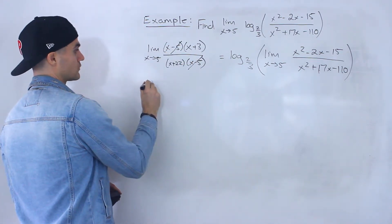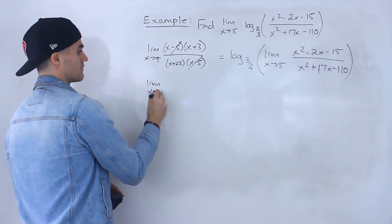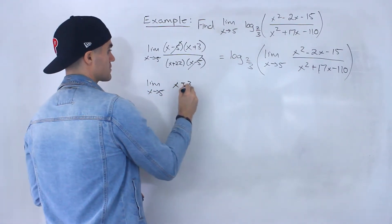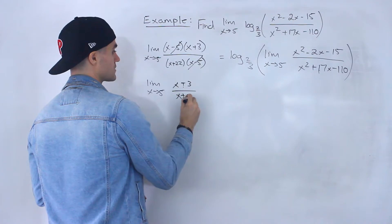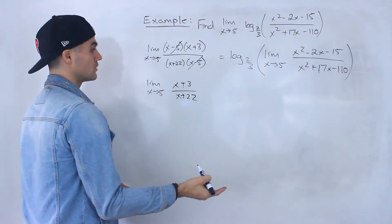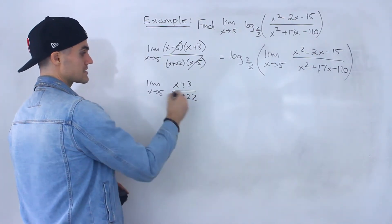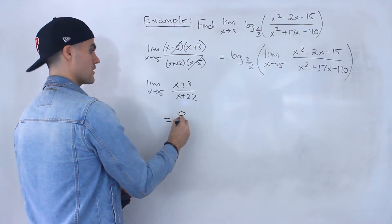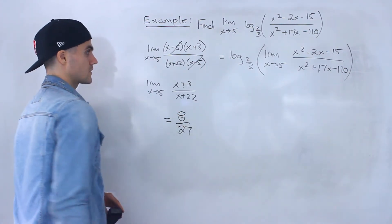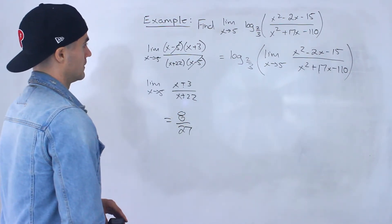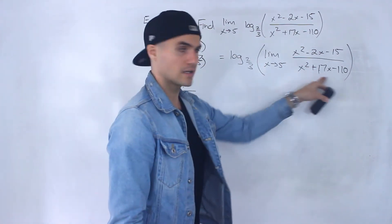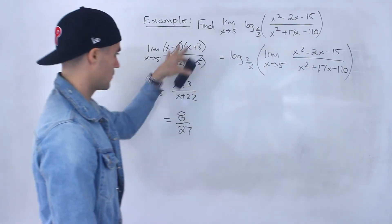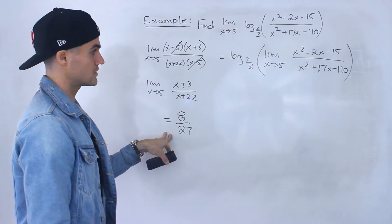And now we're just left with the limit as x approaches 5 of x plus 3 over x plus 22. And now we can do a direct substitution here because that denominator won't be zero anymore. We would end up with 8 over 27 like that. So this whole bracket here, that limit with this work here is equal to 8 over 27.